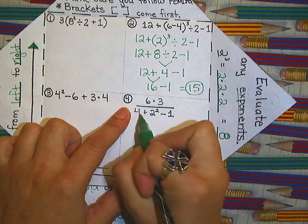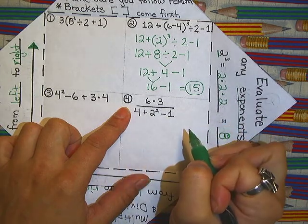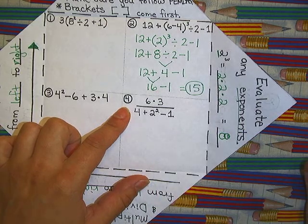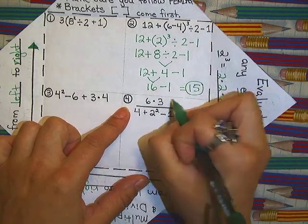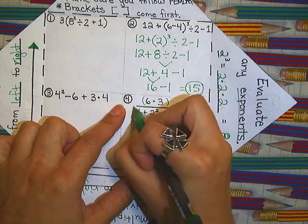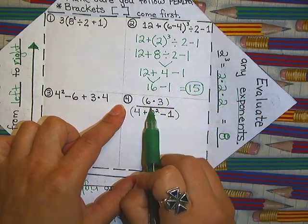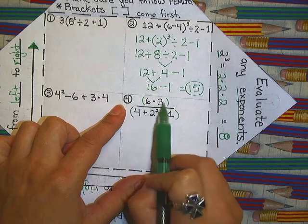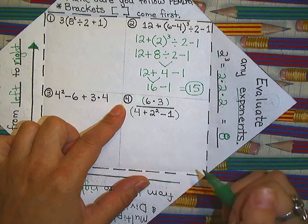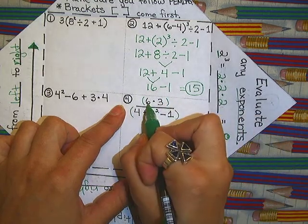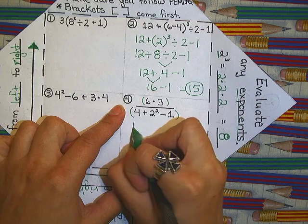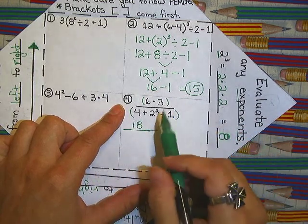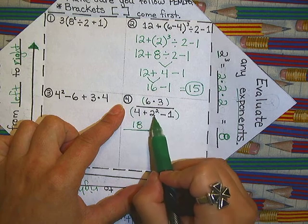Now number four is a little bit trickier. This one starts with, you see multiplication on top, and you see three other things going on below. But what do we first do? I don't see any parentheses. This is where you want to insert parentheses. Because I can't do this division if I don't know what my two values are. So basically we need to figure out our value on the top and our value below.